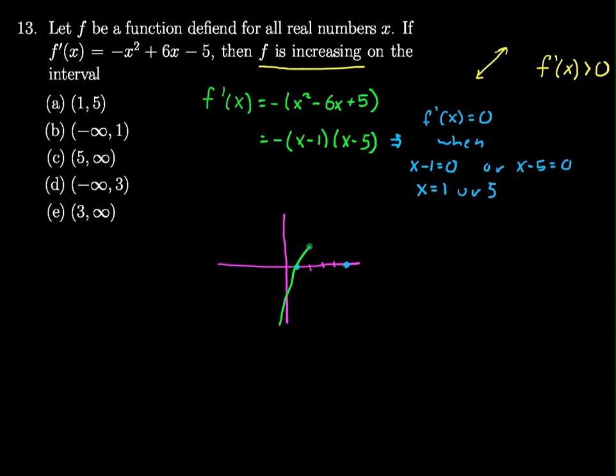This is not necessarily the greatest sketch of a parabola, but it gets the idea across so that I can see that when I am in this interval between 1 and 5, my derivative is above the x-axis, that means that's positive, and that means that f has to be increasing.